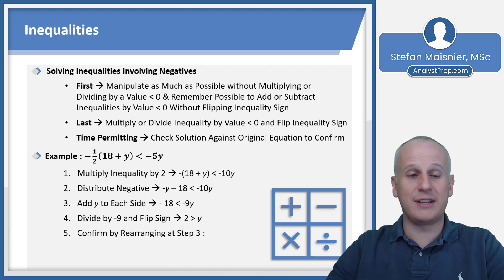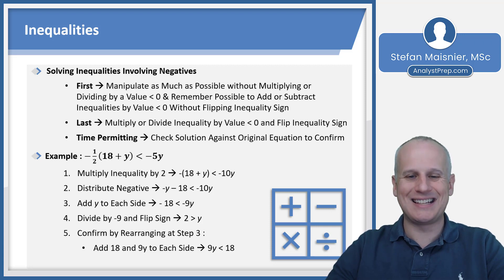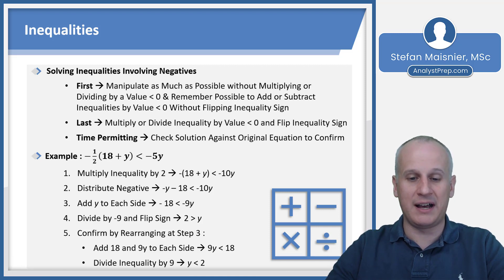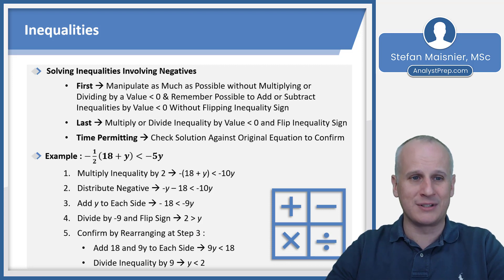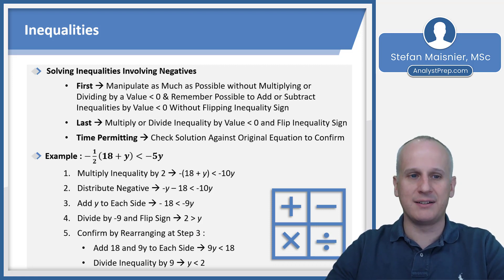Dividing by negative 9 and flipping the sign gives us 2 > y. You can confirm this by rearranging at step 3 — adding 18 and 9y to both sides gives 9y < 18, and dividing by 9 gives y < 2, consistent with our result. This lets you test that your manipulation was done properly, though it does take time and we must be cognizant of time management on the exam.